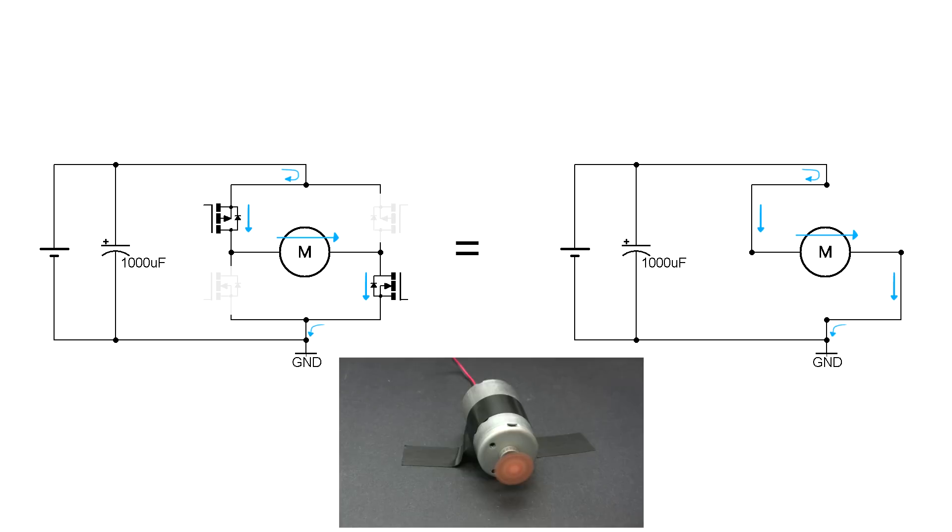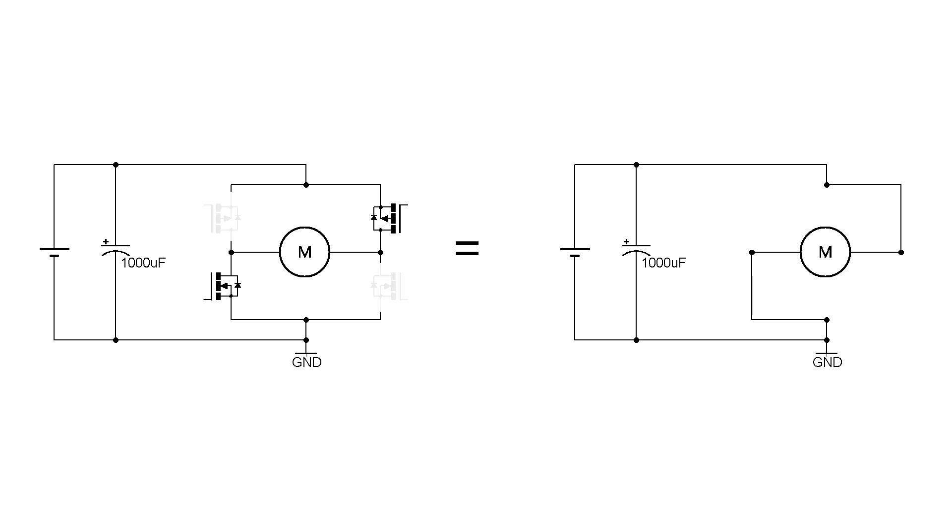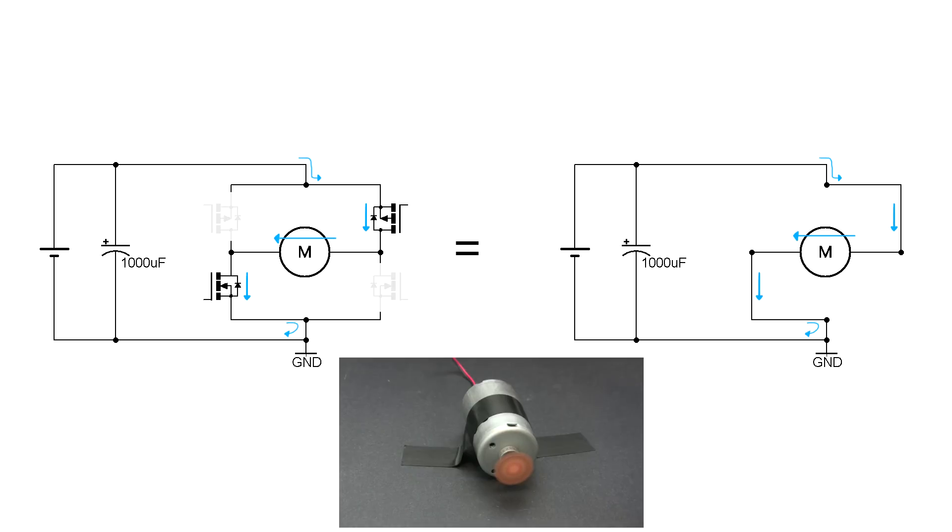Now how do we reverse the direction the motor is spinning? We do that by reversing the direction of the current going through the motor. If we turn these two transistors on and these two off, now current will flow from your power supply, through this transistor, through the motor in this direction, through the other transistor, down to ground. Since we change the direction of the motor current, we change the direction of the motor.